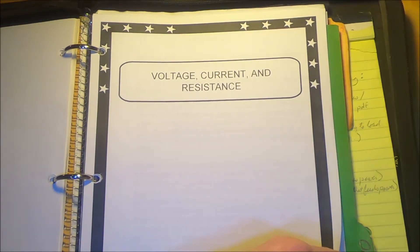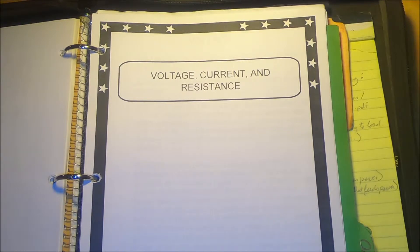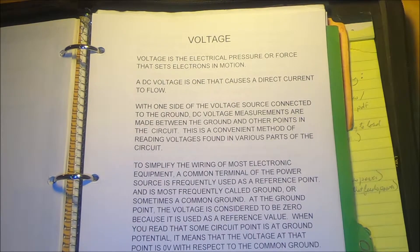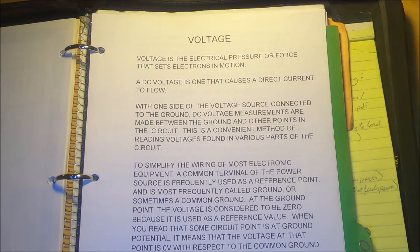Now let's discuss voltage, current, and resistance in the DC circuit. Voltage is the electrical pressure or force that sets electrons in motion. A DC voltage is one that causes a direct current to flow. With one side of the voltage source connected to ground, DC voltage measurements are made between the ground and points in the circuit. This is a convenient method of reading voltages found in various parts of the circuit.